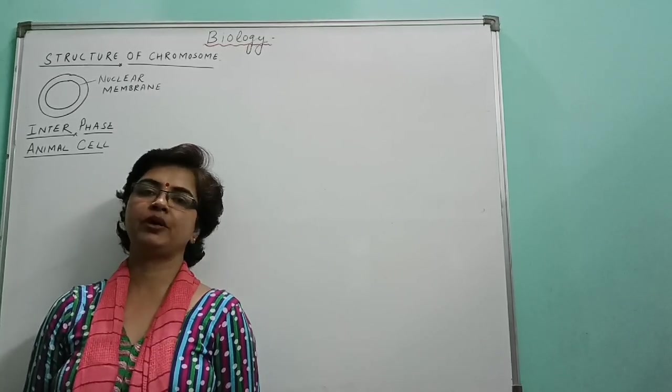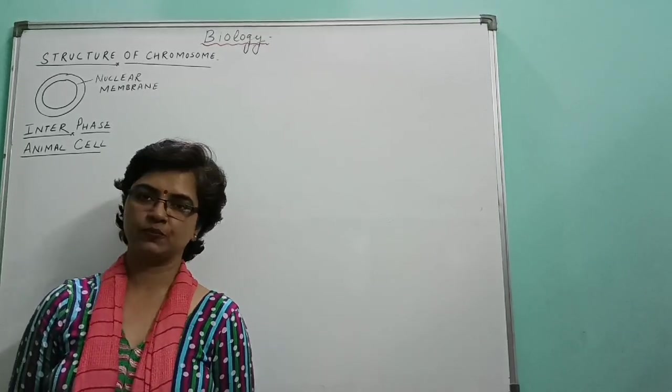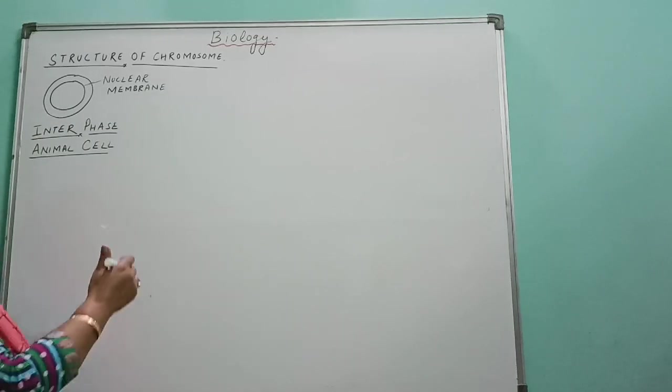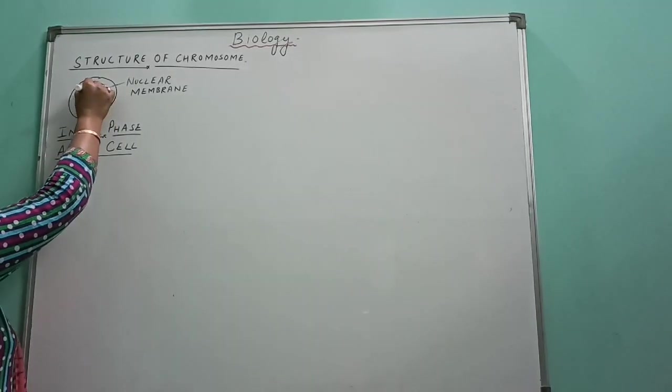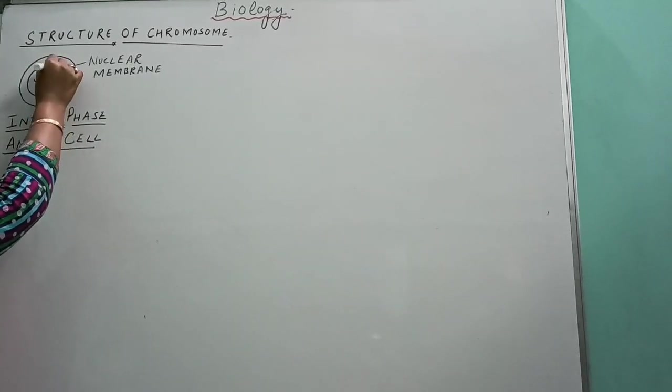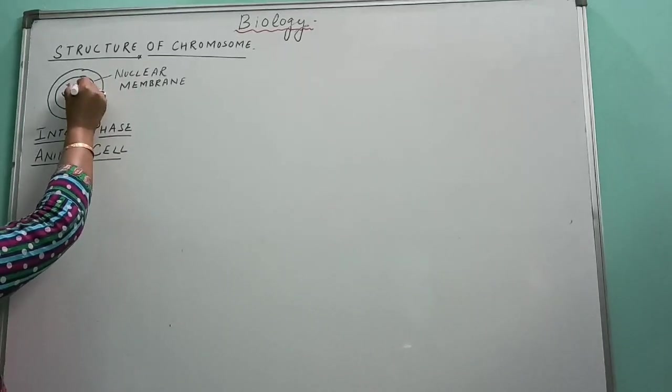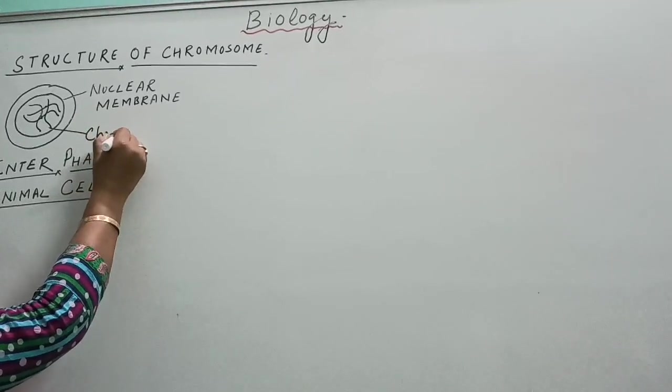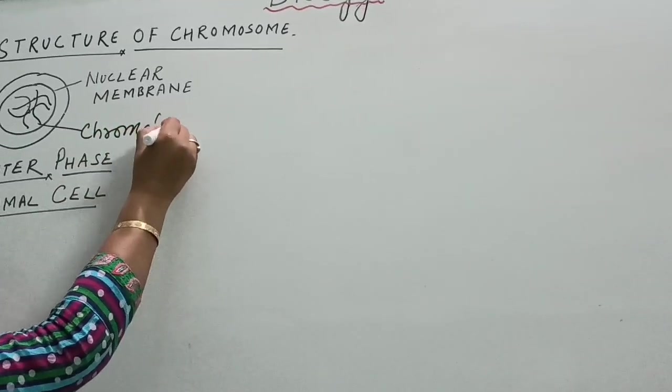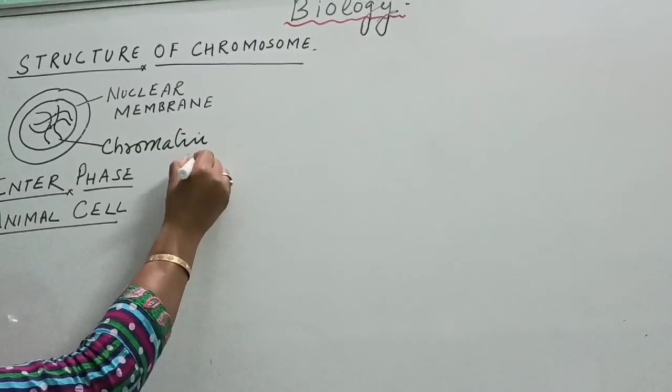Here I am going to explain you structure of chromosome. During interphase, these chromosomes are visible just like a thread, so we label it as chromatin network.